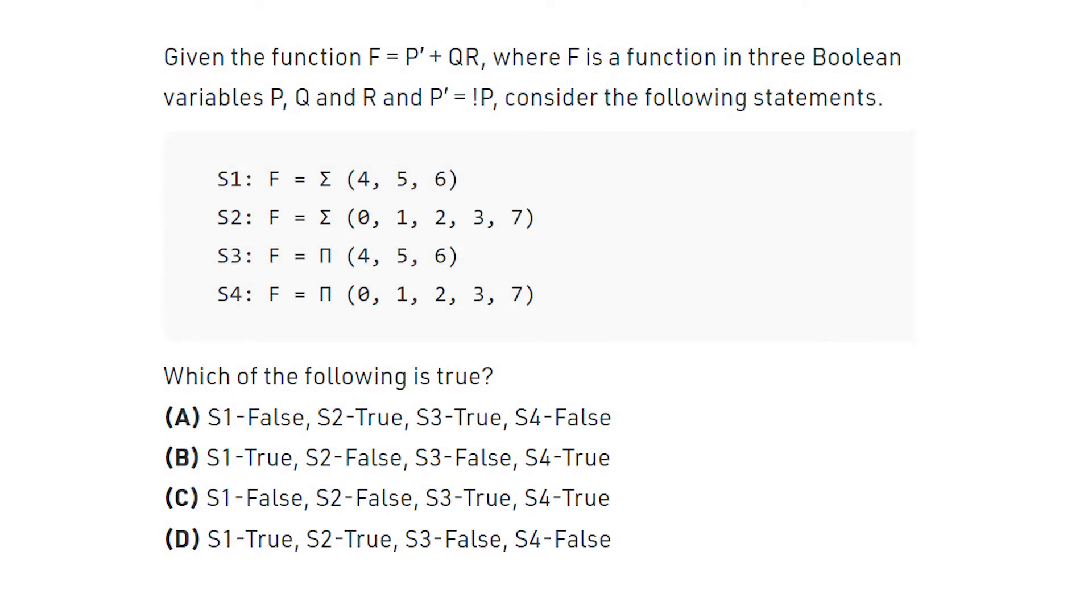Let me read out the statement. Given a function F = P' + QR, where F is a function in three Boolean variables P, Q, and R, and P' is equal to not P, consider the following statements. So, you just have a look at these four statements S1, S2, S3, and S4.